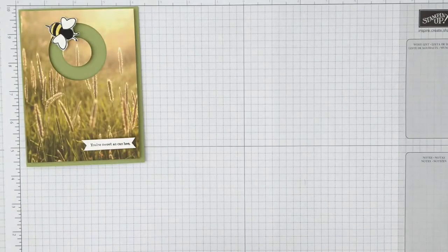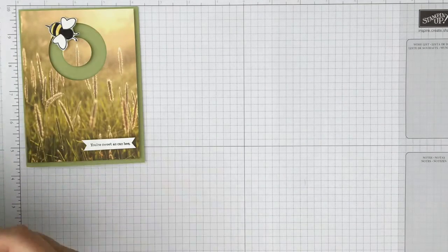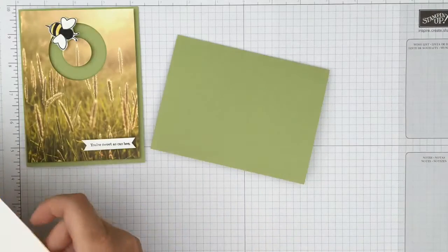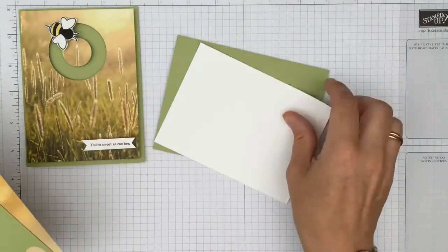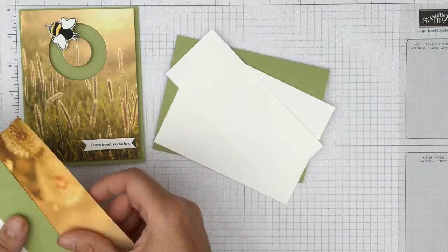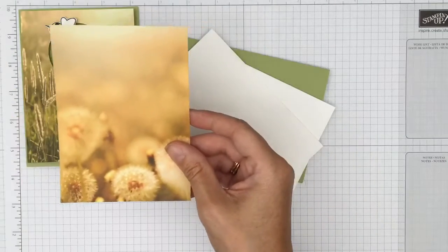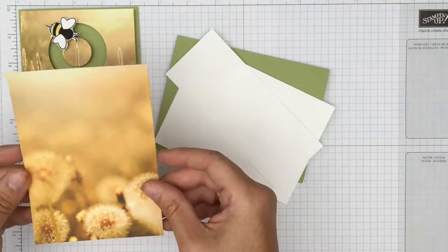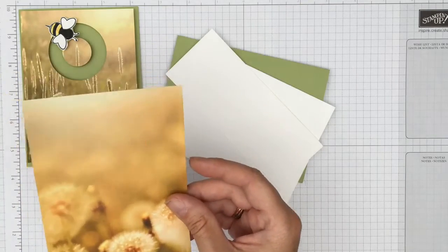The supplies that we're going to use today are: a piece of Pear Pizzazz, a piece of Whisper White, a scrap of Whisper White, and this lovely photographic paper from the Serene Scenery Designer Paper Stack.